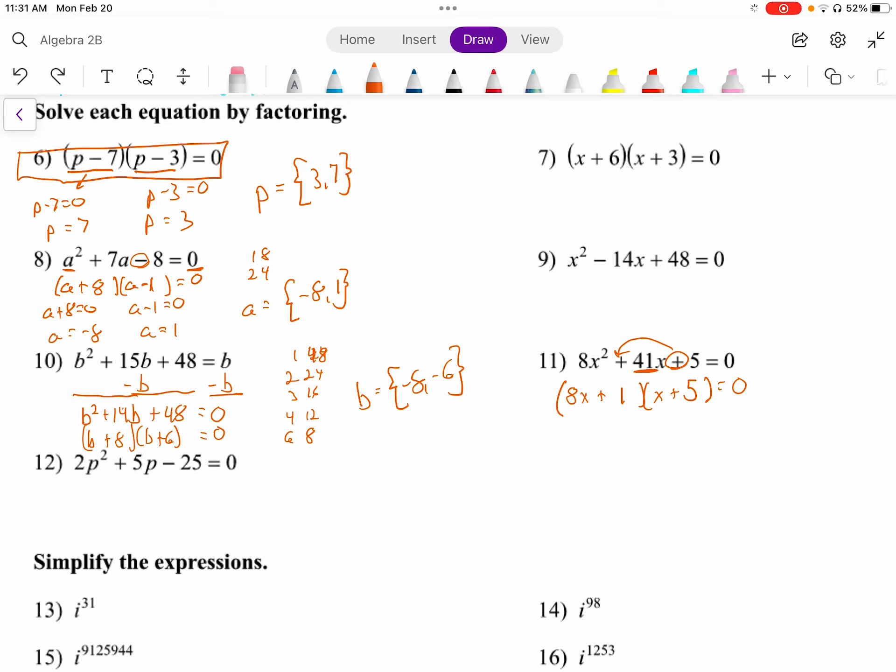And now we haven't seen one of these yet, but this is where it does help to write 8x plus 1 equals 0. We subtract 1 and divide by 8. And so x equals negative 1 eighth and then over here, x plus 5 equals 0. So x equals negative 5 because we subtract 5 from both sides and our solutions are negative 5, negative 1 eighth.